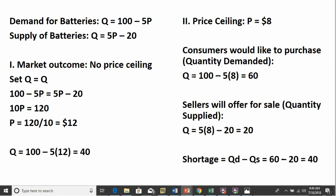For a price ceiling to have an effect, to be binding and create a shortage, the price ceiling must be set below the market clearing price. In this case, the price ceiling is $8, so it satisfies that condition. At a price of $8, consumers would like to buy 60 batteries — 100 minus 40. But sellers will only bring 20 units to the market: 5 times 8 minus 20. So the shortage is quantity demanded minus quantity supplied, which is 40 units.